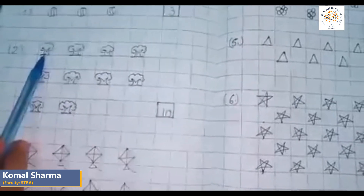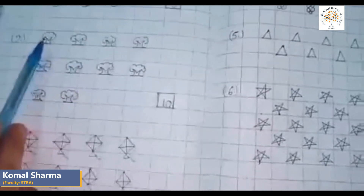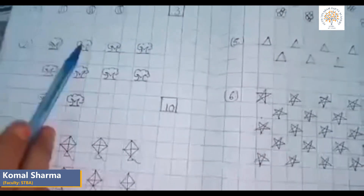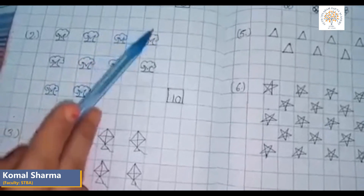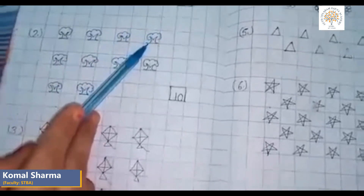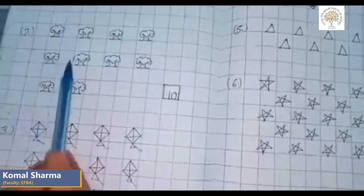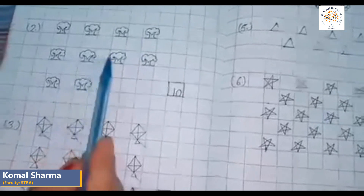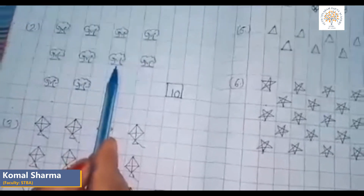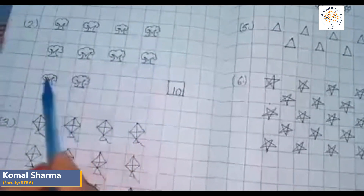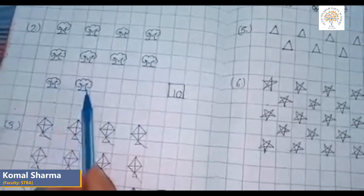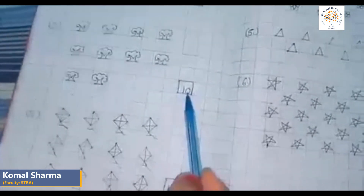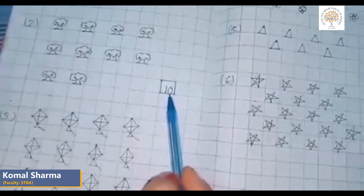How many trees are there? One, two, three, four, five, six, seven, eight, nine, and ten. So we will write ten in the box.